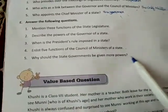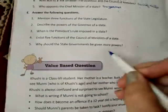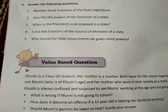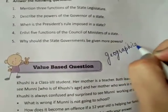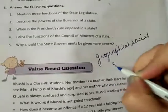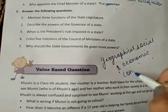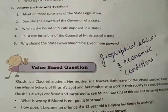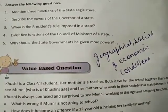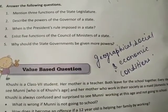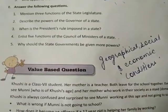E5: Why should the state governments be given more powers? The state governments should be given more powers because the geographical, social, and economic conditions of every state are different, so that the state governments can make better laws.